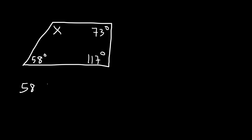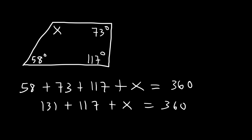So that means 58 plus 73 plus 117 plus x all four angles have to add up to 360. If we add 58 and 73 that's 131. Next if we add 131 plus 117 that's 248. So 248 plus x is equal to 360. To find the value of x we need to subtract both sides by 248. So 360 minus 248 that's about 112. So that's how you could find the missing angle in a quadrilateral. As long as you keep in mind that all four angles have to add up to 360 it's going to be a piece of cake to solve these types of problems.